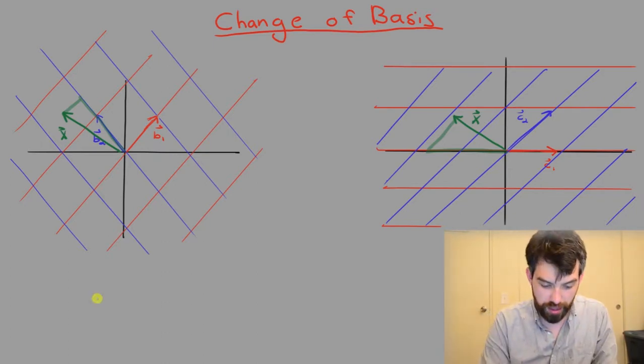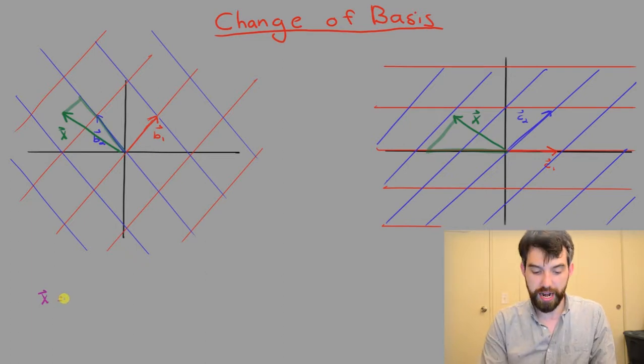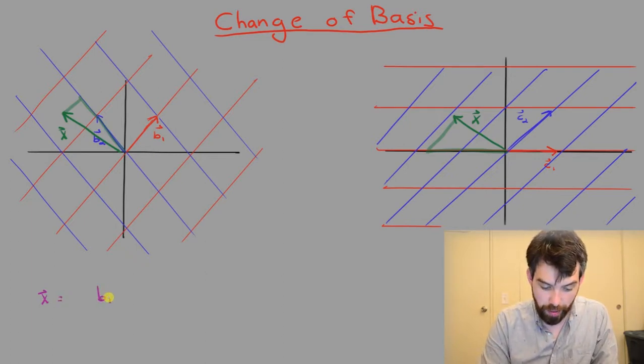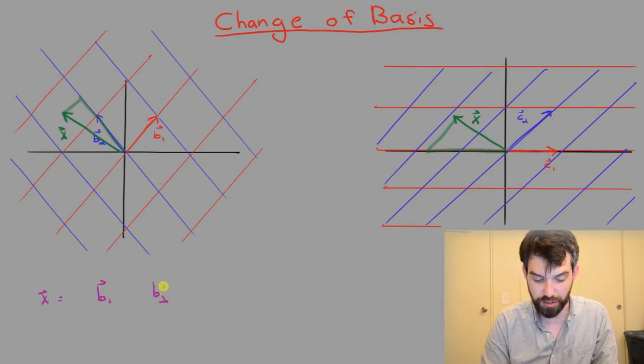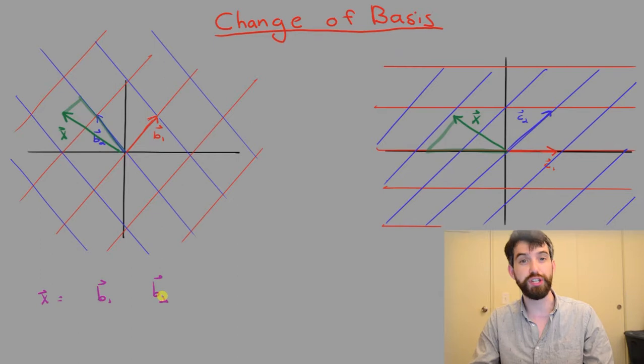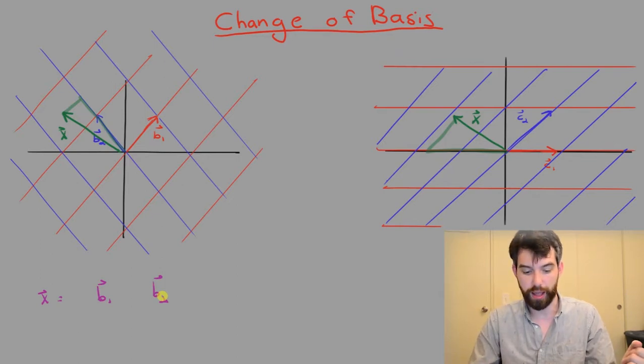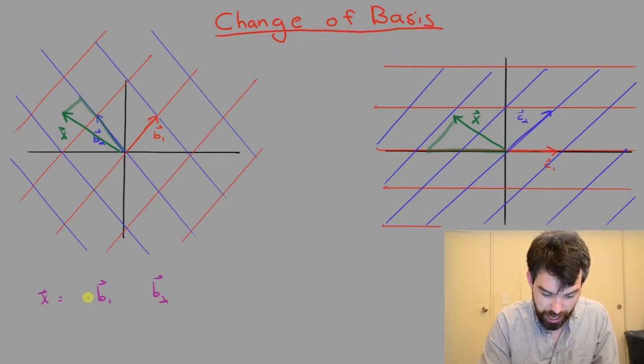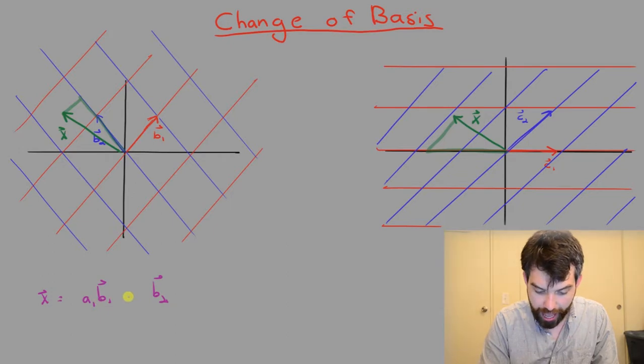So let me start with the vector X. And I'm going to write it as a linear combination of the different basis vectors, the B1 and the B2. Because they're a basis and they span all of R2, every vector can be written this way. Perhaps I'll give the coefficients the names A1 and A2.